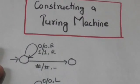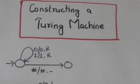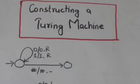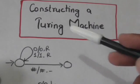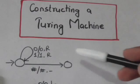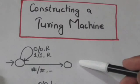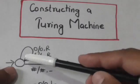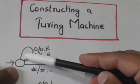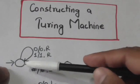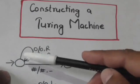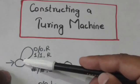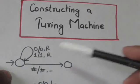Hello friends, welcome back to tutorials. In this tutorial we will learn how we can construct a Turing machine. First of all, see these basic Turing machines. When this Turing machine reads 0 or 1, it simply moves its head to the right without changing the tape symbol and it remains in the same state.